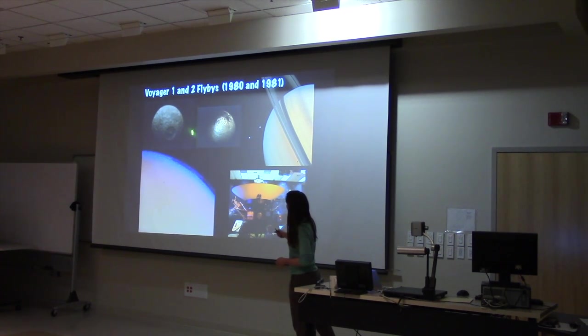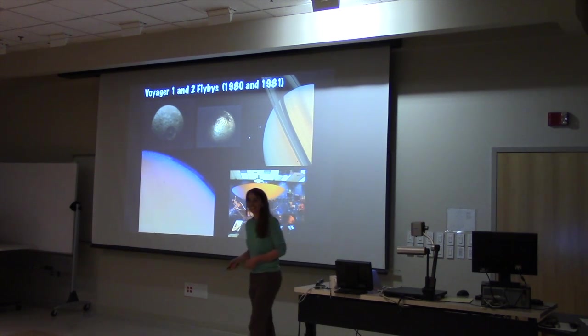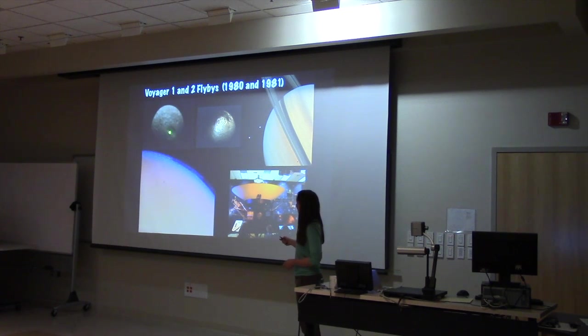Here's Mimas and Iapetus. Mimas here is known as the Death Star Moon. I don't understand why. It's known for having this very large crater.